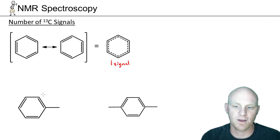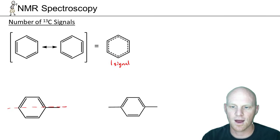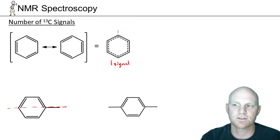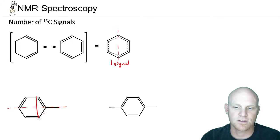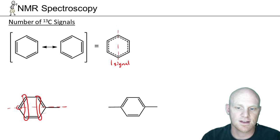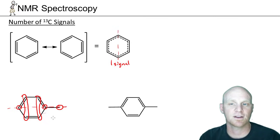If we look at a substituted benzene ring with a single substituent, it still has symmetry — a plane of symmetry right down the middle. Even though the resonance structure shows pi bonds in different positions, there is delocalization all the way around the ring, so this really is symmetric. As a result, the two carbons on either side of the substituent are chemically equivalent, the next two are chemically equivalent, and then there are three individual unique carbons. That gives us five unique carbon environments and therefore five signals in the carbon-13 NMR spectrum.